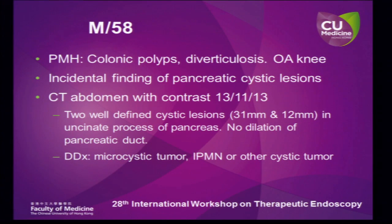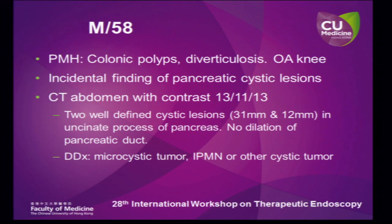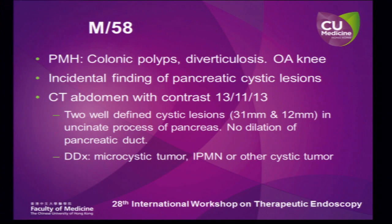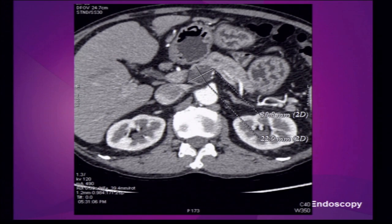Fifty-eight year old gentleman, WHC, with a past medical history of colonic polyps, diverticulosis, and OAN-E. Incidental finding of a pancreatic cystic lesion. The CT abdomen done in November this year shows two well-defined cystic lesions of 31mm and 12mm in the uncinate process of the pancreas. There is no dilatation of the pancreatic duct. Differential diagnosis includes a microcystic tumor, IPMN, or other cystic lesions.